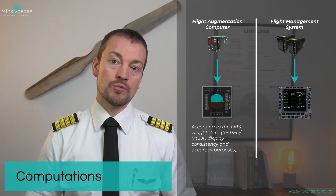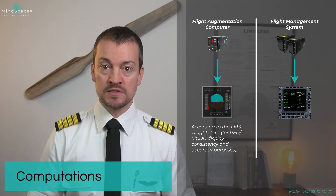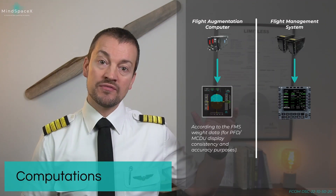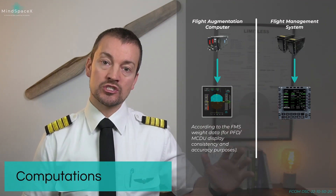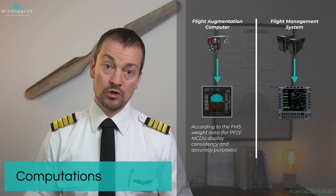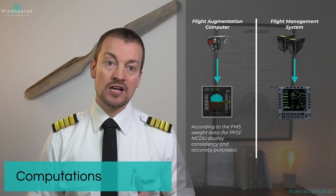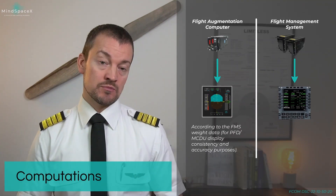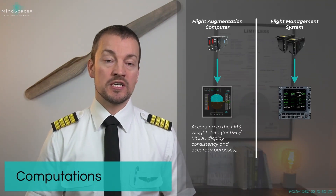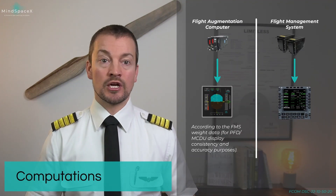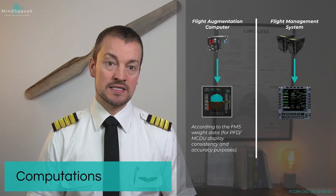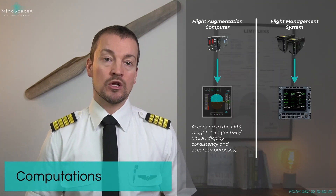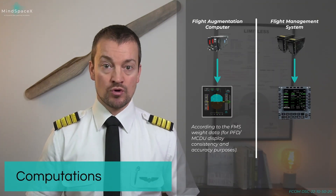The flight management and guidance computer calculates all speeds you see on the MCDU pages. So when we're looking at the PFD and the MCDU pages, although the speeds might be identical or should be identical, they are not calculated by the same source. Because they're not calculated by the same source, we can use them to corroborate the information. The Kalman filtering within the flight management system and throughout the rest of the aircraft uses multiple sources and will alert the pilots of any discrepancies.